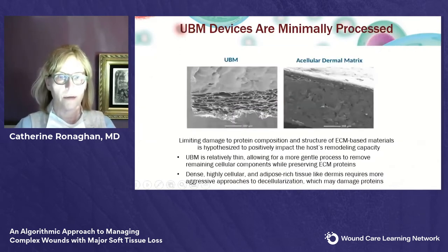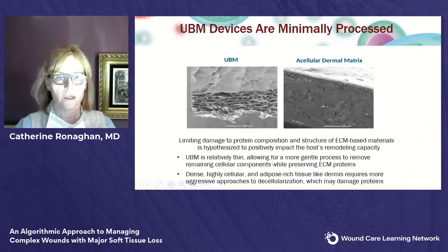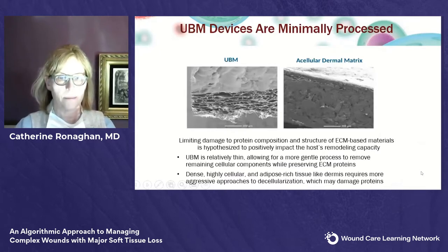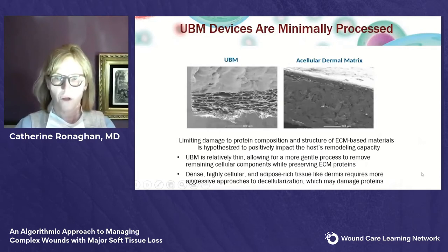Here are micrographs showing how the UBM is oriented versus an acellular dermal matrix. The minimal damage to the protein composition and structure of the ECM is thought to be the reason for this positive impact on the host remodeling capacity. It's very thin, processed gently, and all components are preserved.